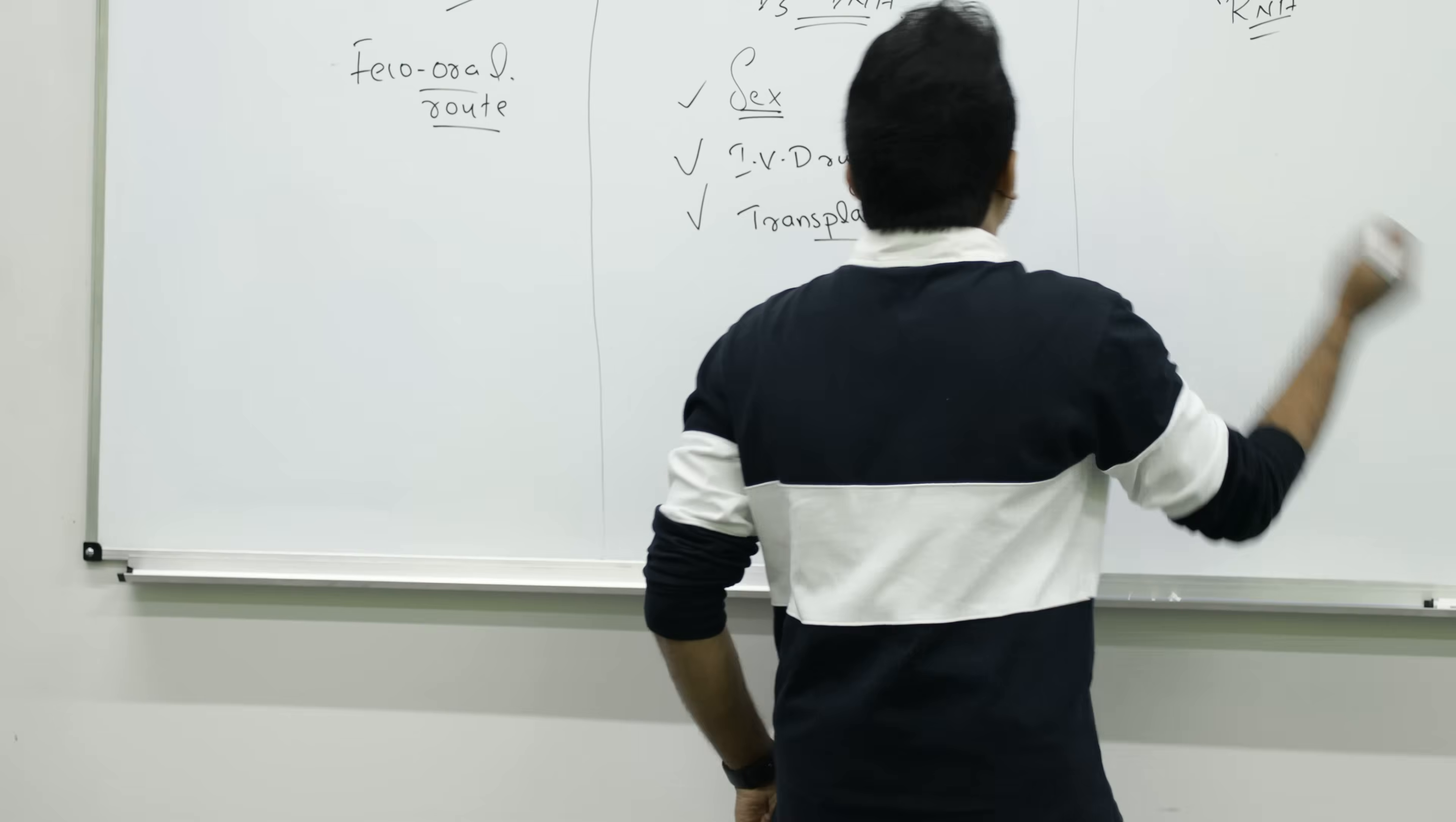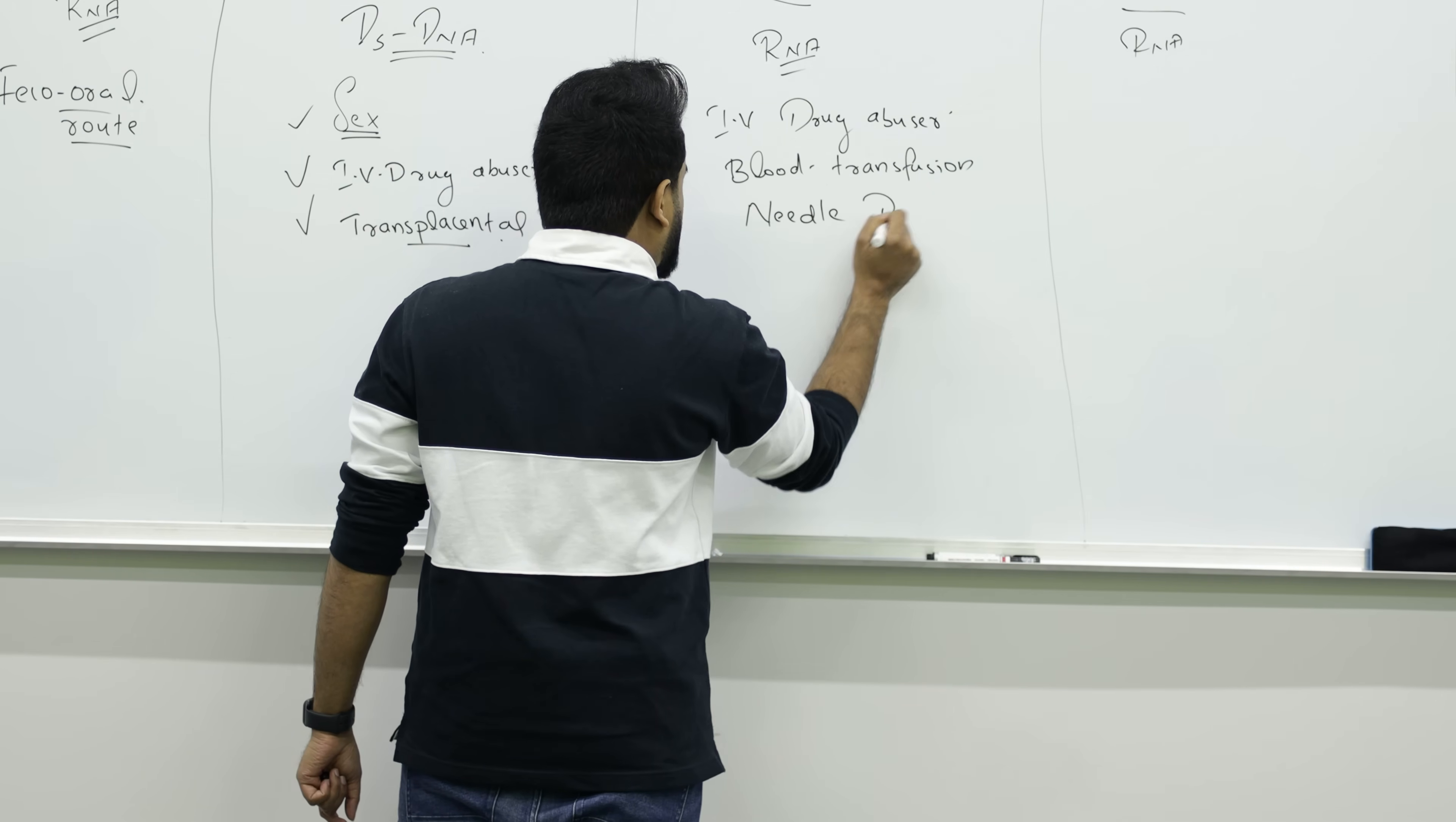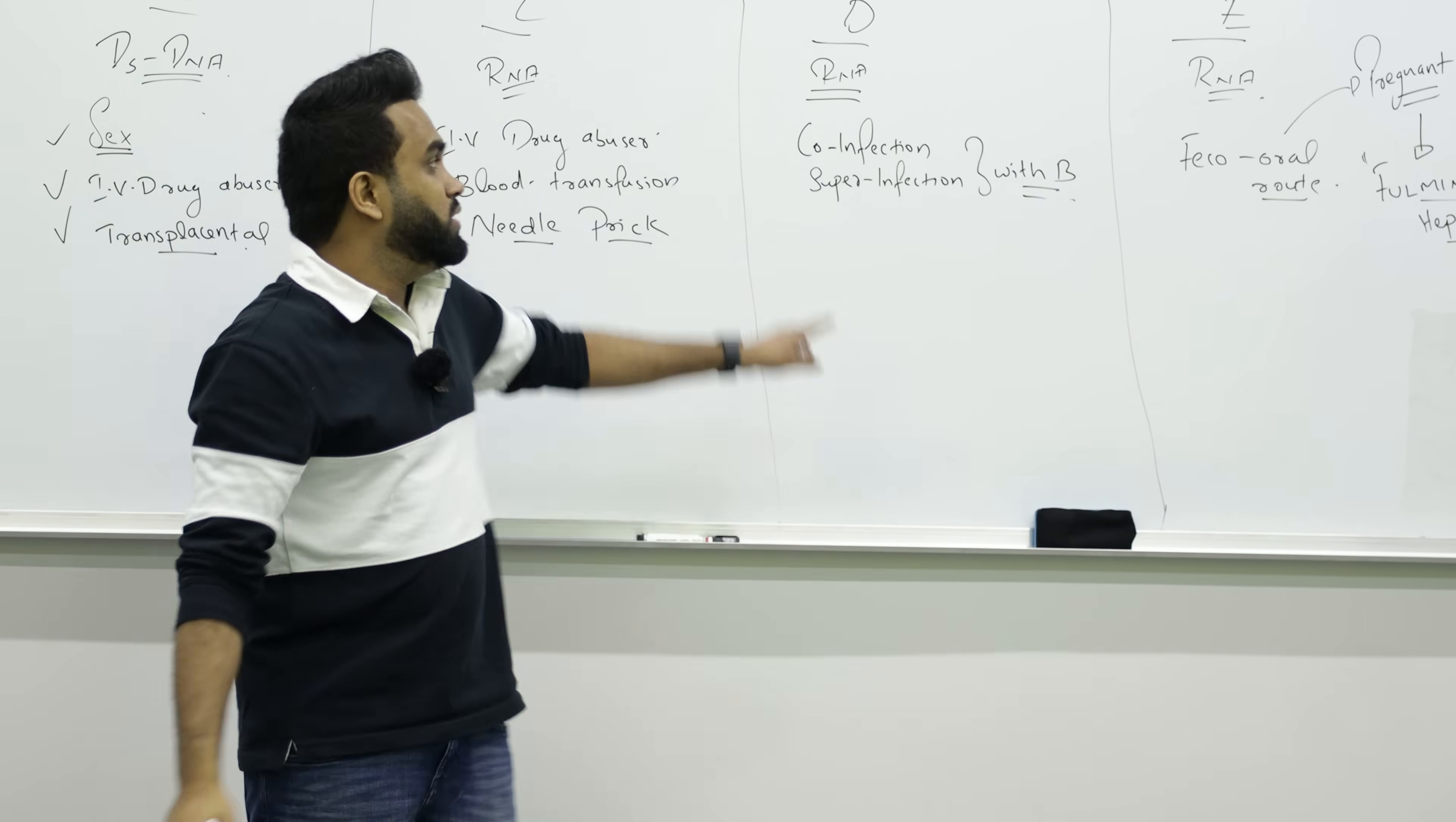C is most common with IV drug abusers or blood transfusion. Dealing with blood, while doing surgery for a hepatitis patient, if I get a needle prick, there's a high chance if that person has hepatitis C, I will also get infected. D is a variety. It's a part of co-infection or super infection. Wherever hepatitis B is infected, hepatitis D will come with them.